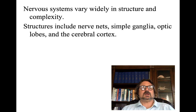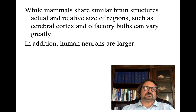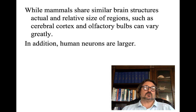Nervous systems vary widely in structure and complexity — we have nerve nets, simple ganglia, optic lobes, and the cerebral cortex for human beings. They're very diverse and adapted toward the environments they need to survive in. While mammals share similar brain structures, actual and relative size of regions such as the cerebral cortex and olfactory bulbs can vary greatly. Human neurons are also a lot larger.